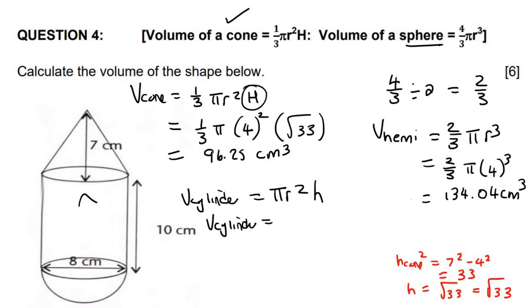So that's just going to be π times the radius, which is four, times the height, which is 10. And there we go. And that'll be 502.65 centimeters cubed.